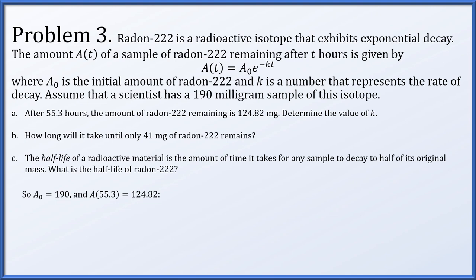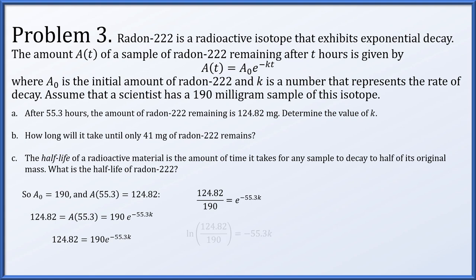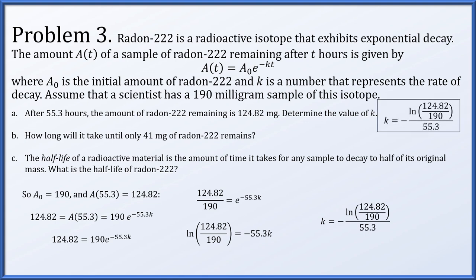A₀ is 190 milligrams and A(55.3) equals 124.82, so 124.82 equals 190 times e to the negative 55.3k. Dividing both sides by 190, taking the natural log, and dividing by negative 55.3 gives k equals negative ln(124.82/190) divided by 55.3.